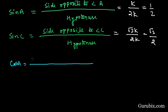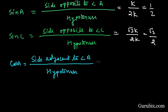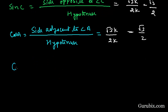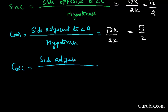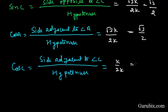Now we shall find cos A. It equals the side adjacent to angle A over the hypotenuse. The side adjacent to angle A is square root of 3K over 2K, so cos A equals square root of 3 over 2. And cos C equals the side adjacent to angle C over the hypotenuse, which is K over 2K. This means cos C equals 1 over 2.